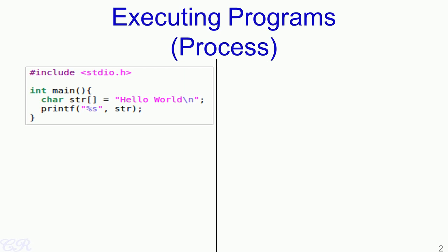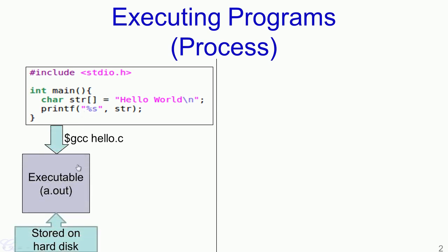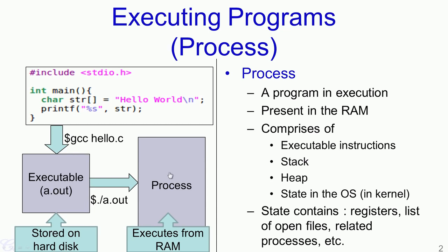Let us review this particular slide again. We have seen that when we take a particular program — this could be any program written in any language — and when we compile it, we get what is known as an executable. The executable will be stored on the hard disk, and whenever a user runs this program, it creates what is known as a process. This process is created by the operating system, and it executes in RAM. Essentially, the executable stored on the hard disk would be loaded into RAM and then execution is passed to this particular program, which will then execute in the CPU.